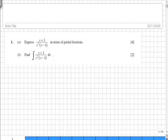Question 1 asks us to express the expression x plus 3 over x squared times x minus 1 in partial fractions. The first stage is to split it up into its parts.